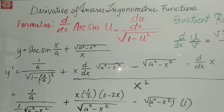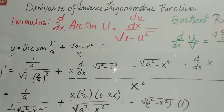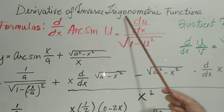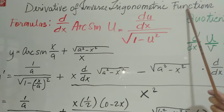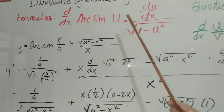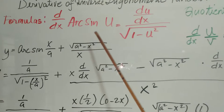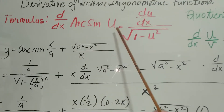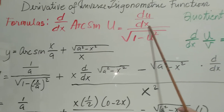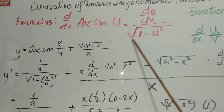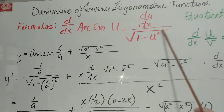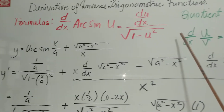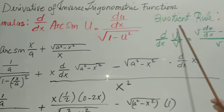Hi, today we're going to have a very interesting topic on the derivative of inverse trigonometric functions. And we're going to use two formulas here. The first one is the derivative of arcsin u, which is equal to du/dx over the square root of 1 minus u squared. And the other one is the quotient rule.